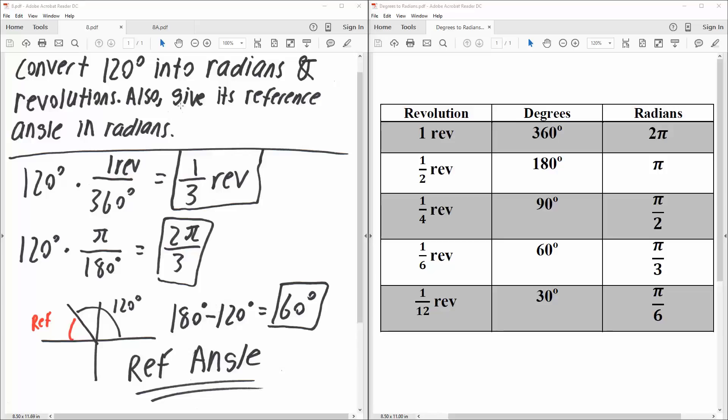Okay, in this video, we want to convert from degrees into radians and revolutions. And we also want to give its reference angle. This should say degrees.